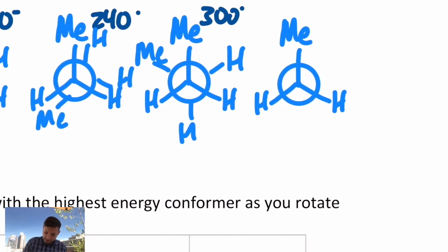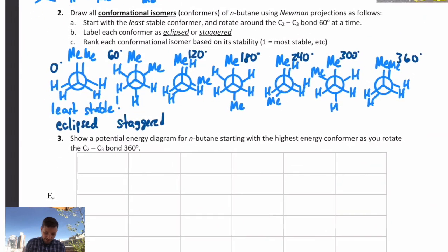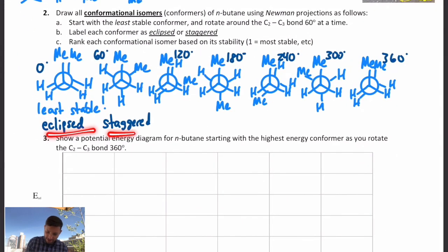And one more I'll call 360. This is actually full circle. We're back to the same. That's where we were at zero degrees, and we have those methyls eclipsing each other just like they were in the beginning. So we went back and forth between eclipsed, staggered, eclipsed, staggered, etc.